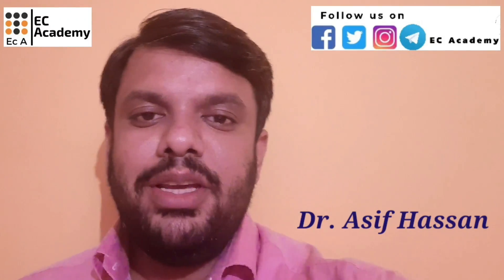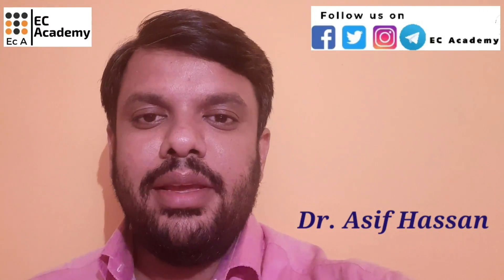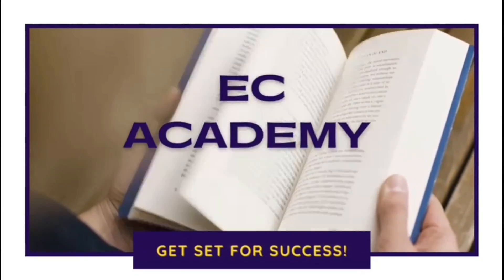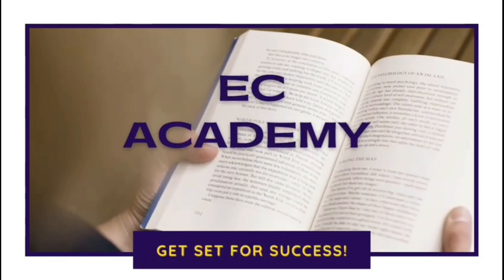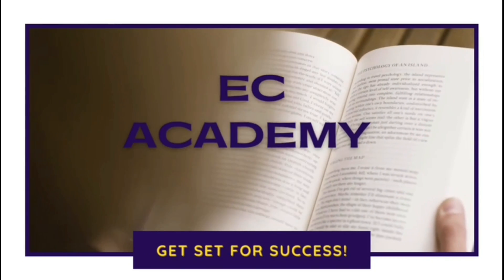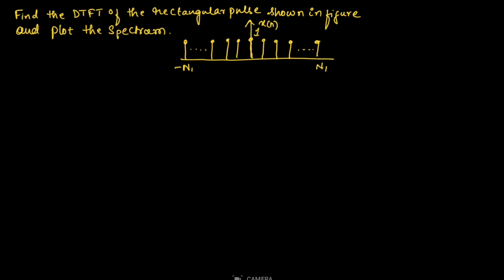Hello friends, welcome to ESA Academy. In this lecture, let us understand a problem on discrete time Fourier transform. Here we need to find the discrete time Fourier transform of the rectangular pulse which is shown in this figure, and also we need to plot the spectrum.